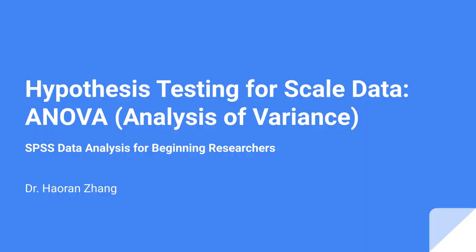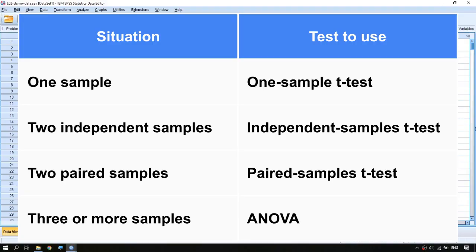In this video I'm going to talk about another type of hypothesis test which is ANOVA. ANOVA stands for analysis of variance. In the previous video we went through the t-test for one sample and the t-test for two samples, but if you want to compare a variable across three or more samples then the t-test doesn't work anymore, and in that case we need to use ANOVA.